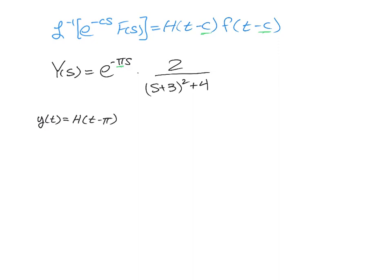Now that minus three is going to have an exponential shift. So that's going to create an e to the negative three. And then we're going to normally have a t there. But again, because we have our Heaviside, it's going to be t minus π.